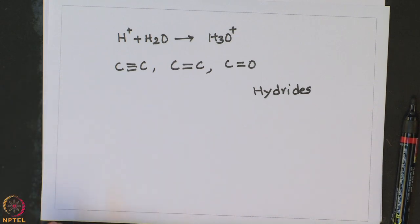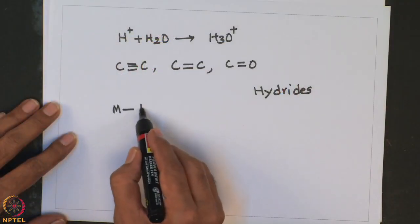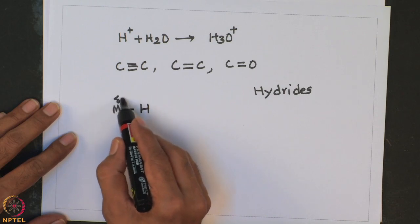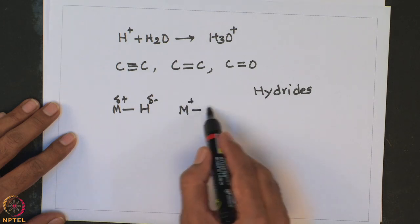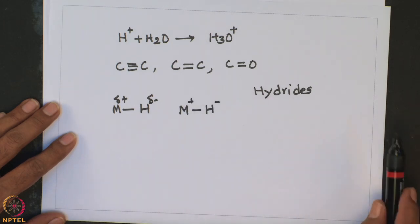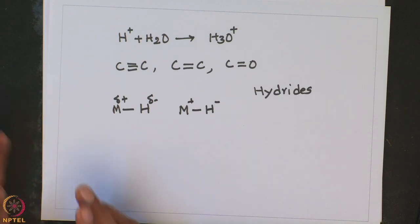There are three different types of hydrides: ionic hydrides, covalent hydrides, and metallic hydrides. Metals with electronegativity less than 1.2 form ionic hydrides — these carry δ+ on the metal and H−. Metals with electronegativity less than 1.2 are essentially alkali metals or alkaline earth metals.